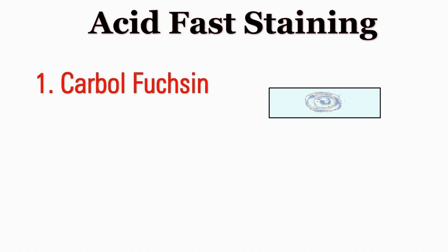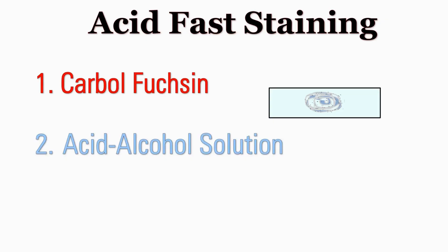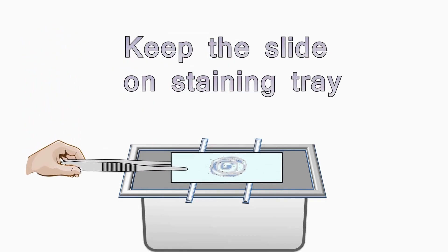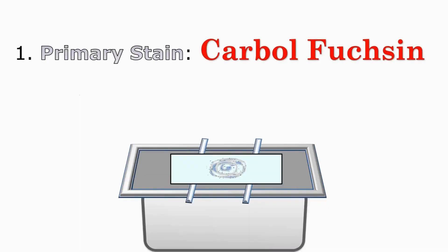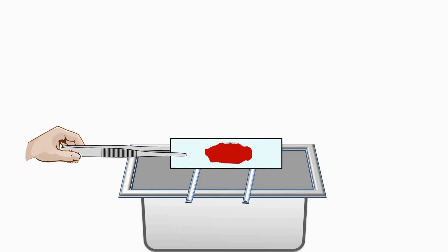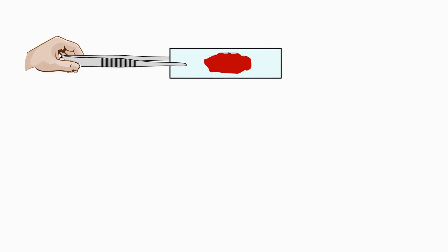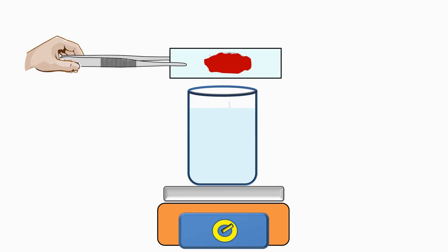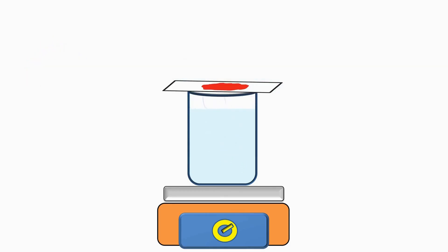In acid-fast staining, we apply three different reagents in sequence: carbolfuchsin, acid-alcohol solution, and methylene blue. Keep the slide on the staining tray. The first stain we are going to add is carbolfuchsin — it is the primary stain. Take out carbolfuchsin with a dropper and flood the smear with carbolfuchsin. Now hold the slide with forceps and apply heat by keeping a glass beaker of water on the hot plate. Once the water starts boiling and steam is generated, keep the slide on the beaker. The steam heats the slide, and this heat is essential for penetration of the carbolfuchsin stain into the bacterial cells.